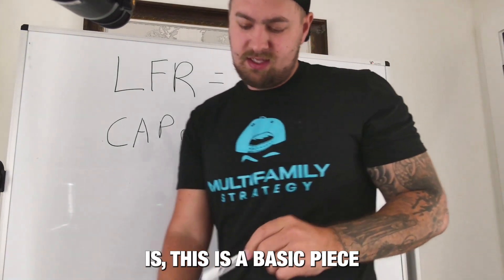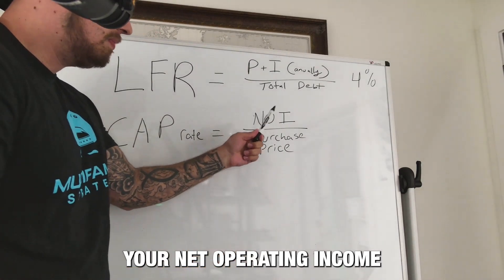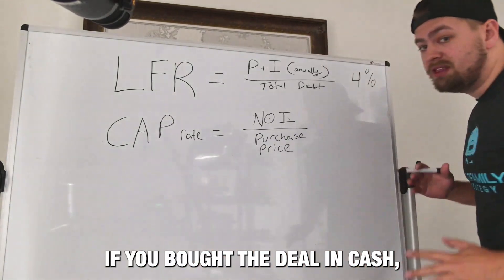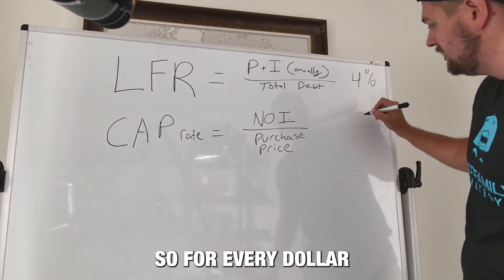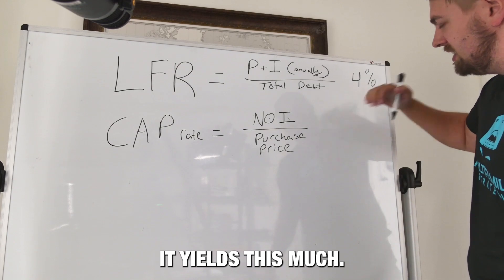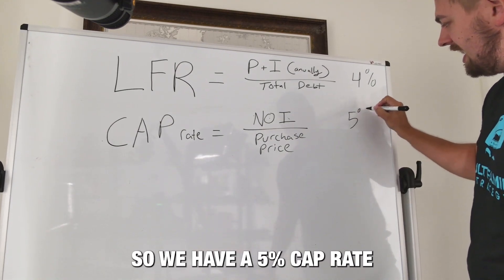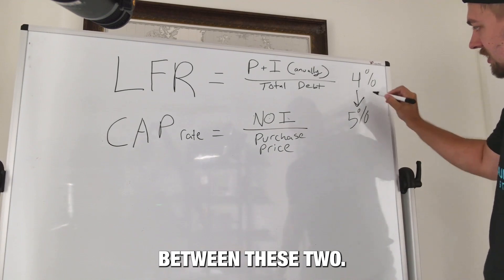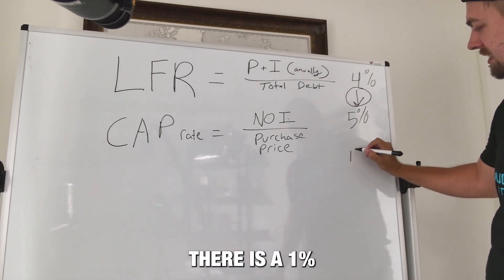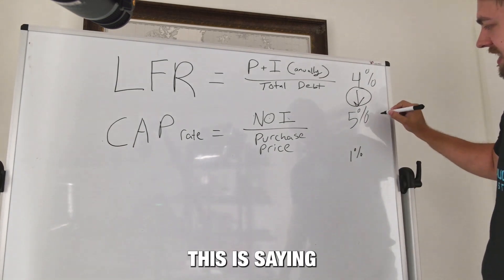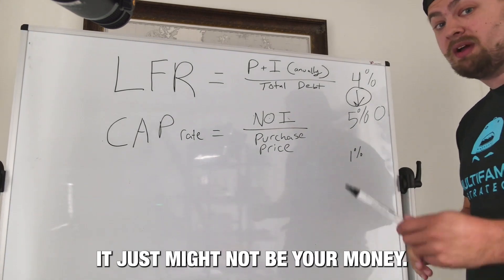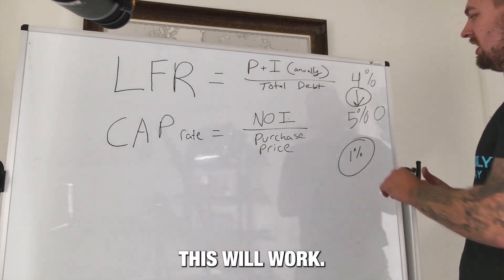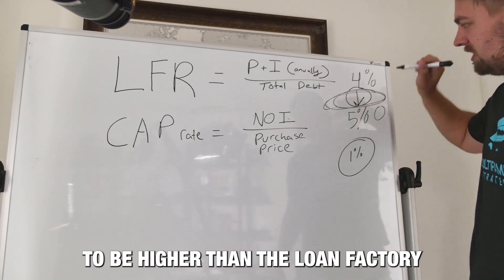Now let's talk about the cap rate. If you don't know what a cap rate is, this is a basic piece of real estate math. This is just saying your net operating income — NOI — divided by the purchase price, represented as a percentage. This is essentially saying if you bought the deal in cash, this would be your return on investment. For every dollar invested into the deal, it yields this much. Let's say we're buying on a five cap. So we have a 5% cap rate and a 4% loan factor rate, which means there is a 1% delta where the cap rate is higher than the debt cost. Every dollar in the deal yields 5%; if you're borrowing at 4%, you are making a 1% spread on every dollar borrowed. This will work.